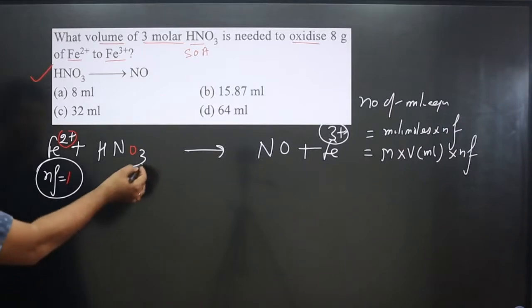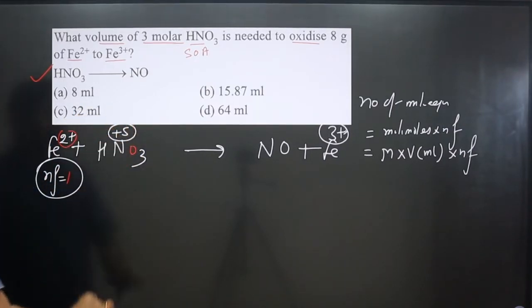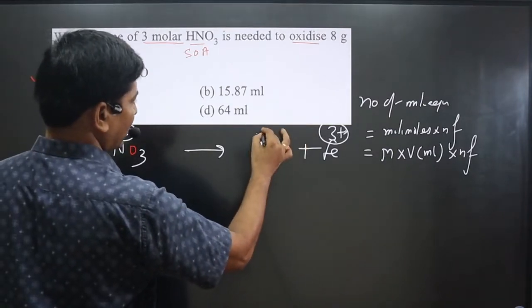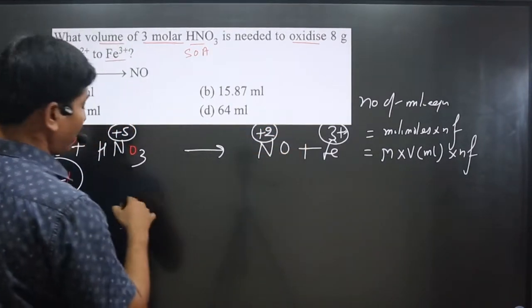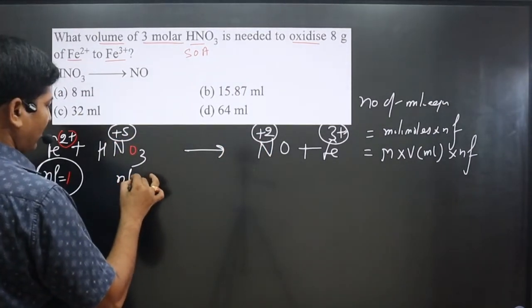For nitric acid we also calculate it. Hydrogen is plus 1, nitrogen is present in plus 5 oxidation number. Oxygen is minus 2. In NO, nitrogen is present in plus 2 oxidation number. Find the difference in oxidation number: 5 minus 2 equals 3. N-factor value is 3.